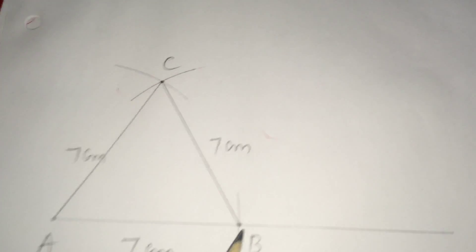Take A as center and draw an arc like this and with B as center, draw another arc which cuts the previous arc at C.